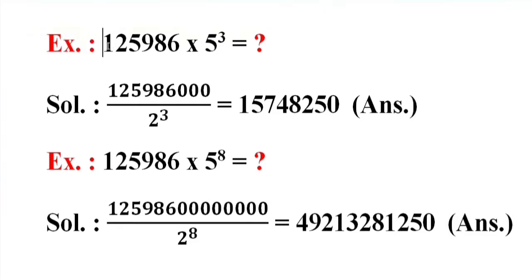Example: 125986 triple 0 by 2 cube equal 1574825. Answer.